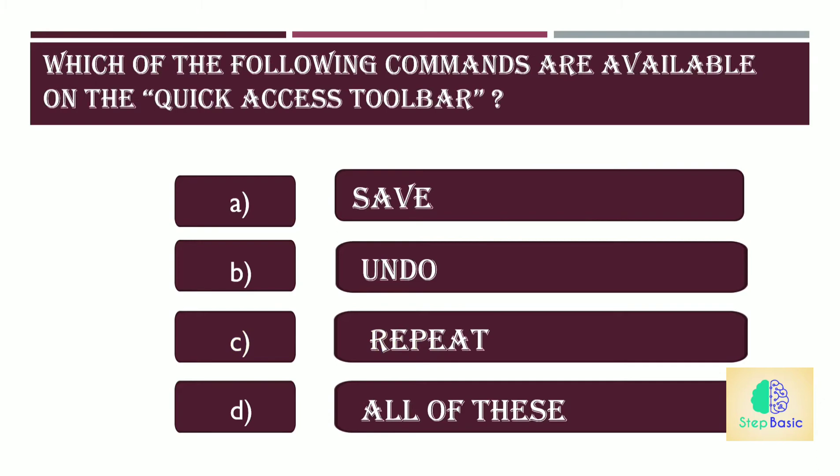Which of the following commands are available on the quick access toolbar? Options are: A. Save, B. Undo, C. Repeat, or D. All of these. The answer is D, all of these.